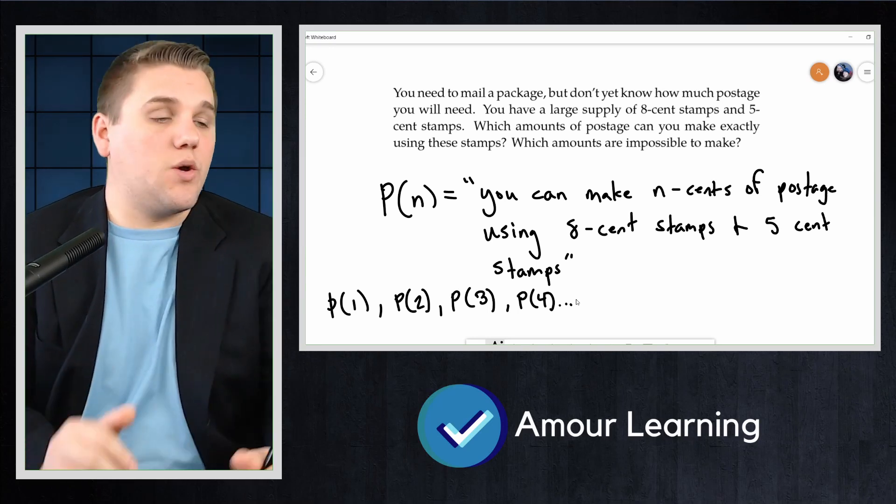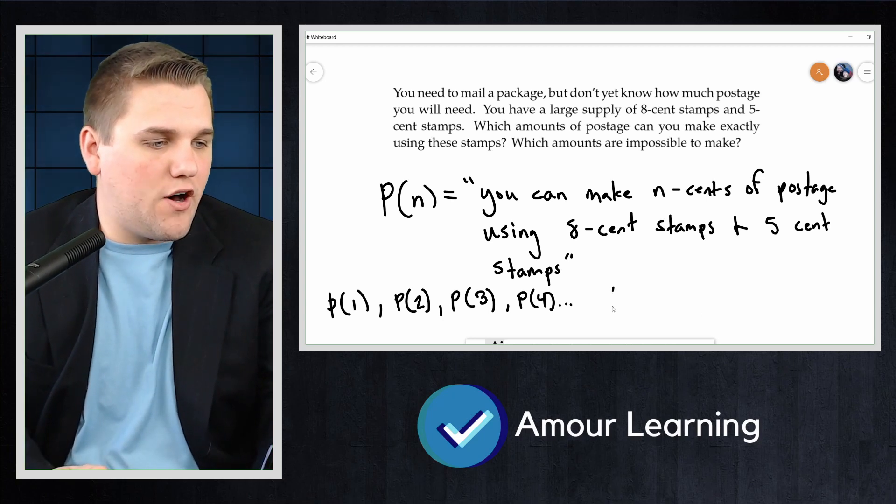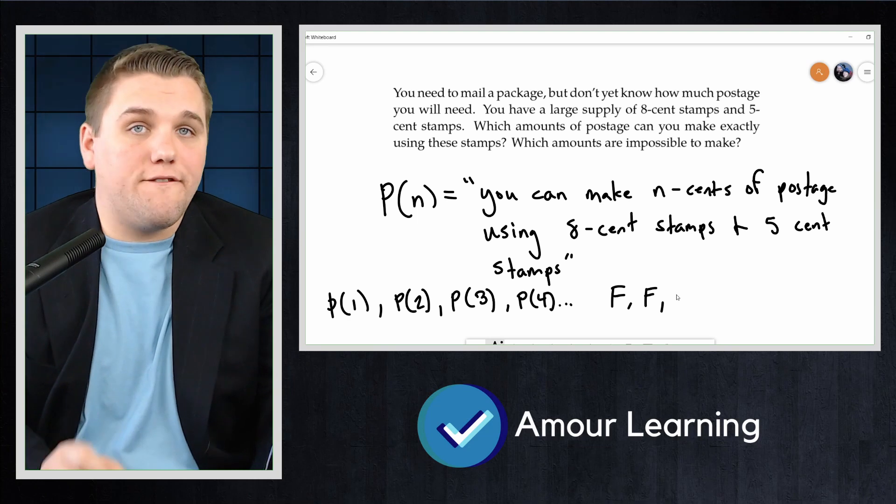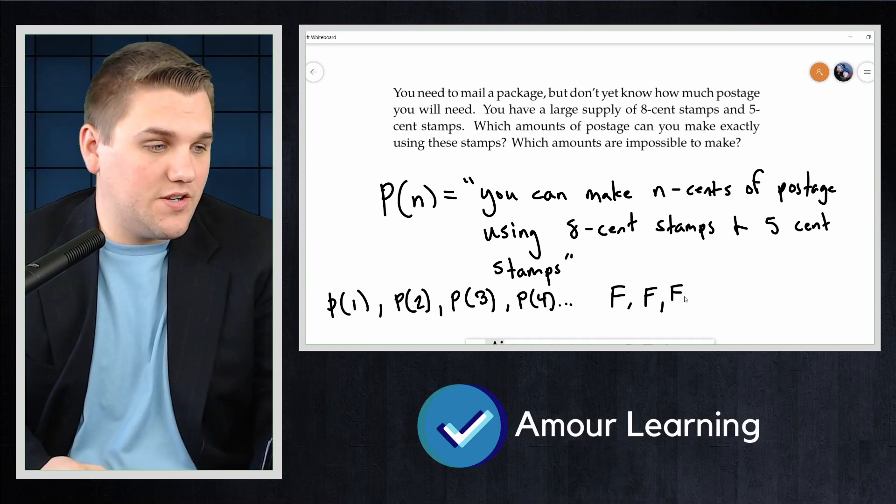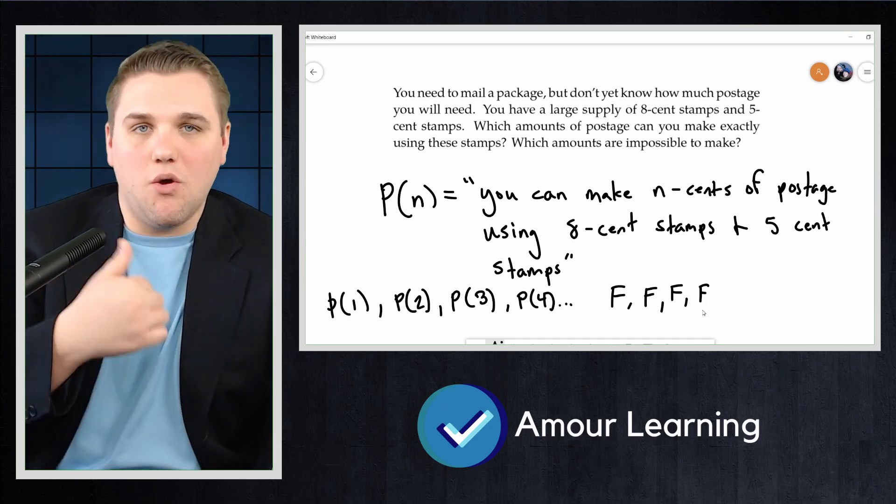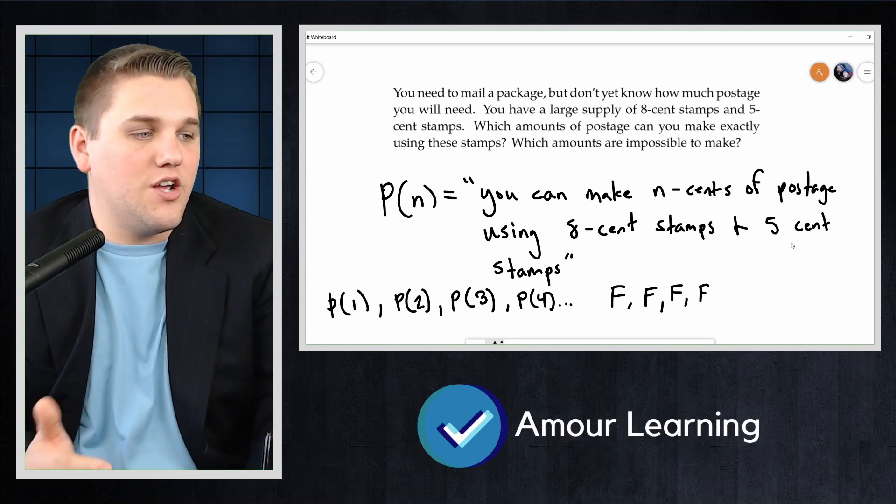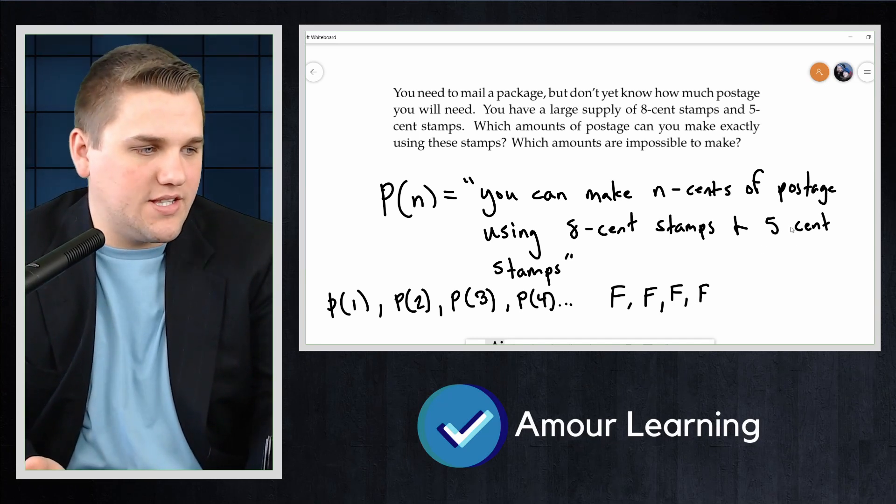In our particular case, the sequence starts false, false, false, false, because you can't make 1-cent, 2-cent, 3-cent, or 4-cent stamps, since the cheapest stamp you have is 5 cents.